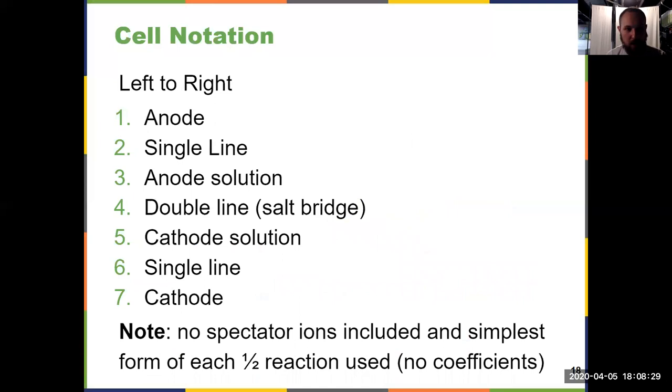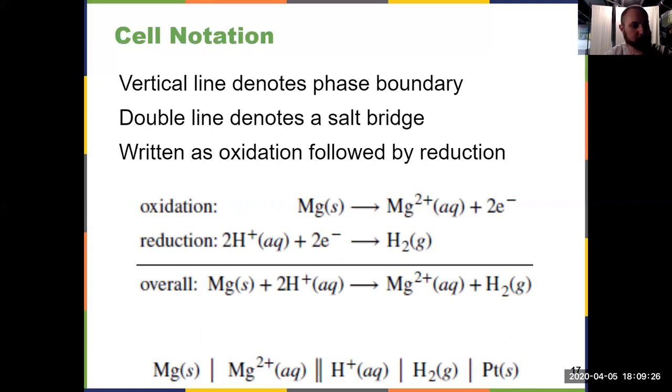So what I've done on the next slide here, 18, is show you how to write these things out left to right. You've got seven parts. The anode, which is going to be a solid metal. Then a single line to show the phase boundary. Then whatever the corresponding cation is in the anode solution. Then you do a double line for your salt bridge. Then you show whatever is an aqueous solution for your cathode. Again, positively charged. Then a single line for your phase boundary again. And then whatever the metal for your cathode is. And you'll notice, if you look back at the previous slide and what's mentioned here on slide 18, we don't show the spectator ions because they're not actually doing anything other than keeping our charge balanced. So I don't care about the spectator ions in those cell diagrams. So we don't include those. And I also show the simplest form of every half reaction. So you don't even have to worry about balancing it. Because notice, if you look at the one at the bottom of 17 here, H plus and H2, well, that's clearly not balanced. But that's okay. We don't show coefficients in your cell notations.